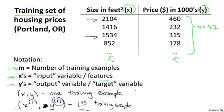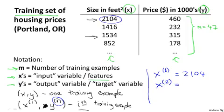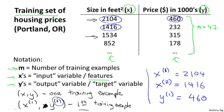So, for example, x^(1) refers to the input value from the first training example. So that's 2,104, because that's x in the first row. x^(2) would be equal to 1,416, that's the second x. And y^(1) will be equal to 460, because that's the y value for my first training example. That's what that 1 refers to.